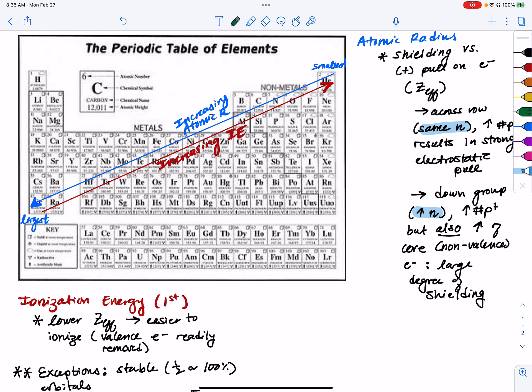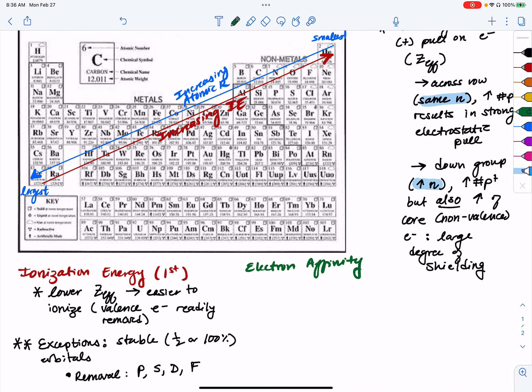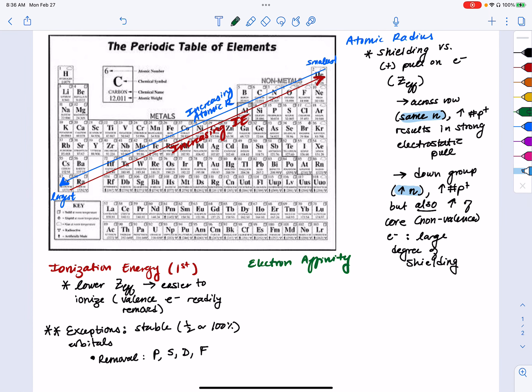Now the cousin of ionization energy, almost its inverse, is electron affinity. So where ionization energy is the energy that is required to remove an electron, the inverse of that, electron affinity, is the amount of energy that is released when an electron is added.